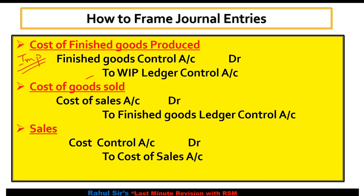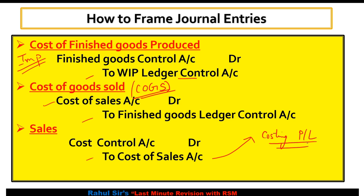For cost of finished goods produced: Finished Goods Control Account debit, to WIP Control Account — since from work in progress you get finished goods. Cost of goods sold (COGS): Cost of Sales Control Account debit, to Finished Goods Control Account. For sales: Cost Control Account debit, to Cost of Sales. The balance of cost of sales is then transferred to the Costing Profit and Loss account. Whether you write cost of sales or costing P&L, it is similar as cost of sales balance goes to costing P&L.